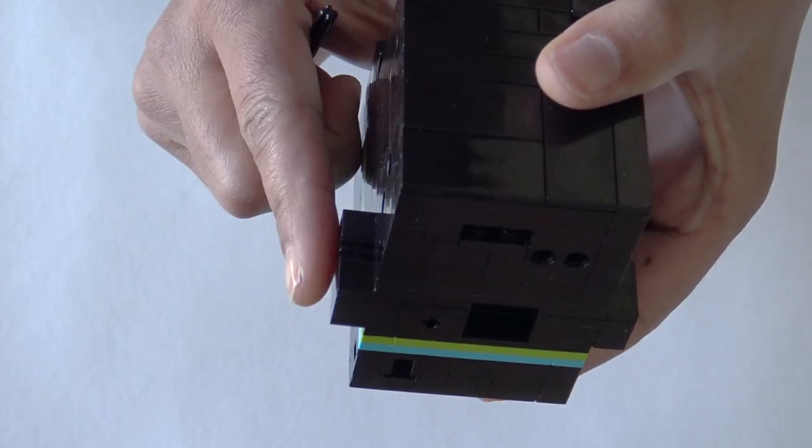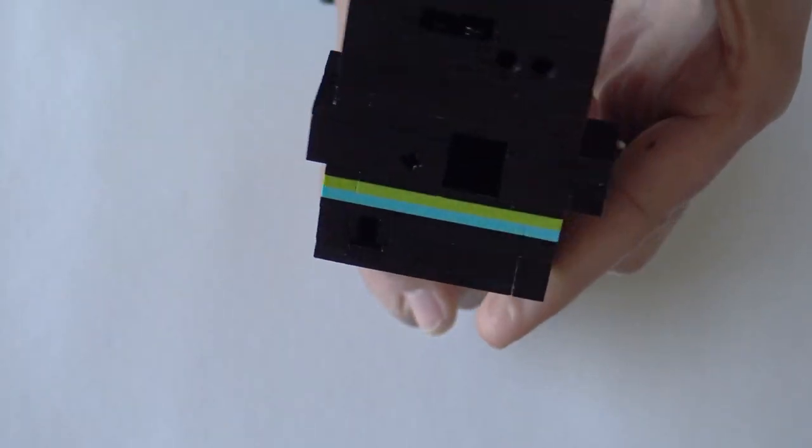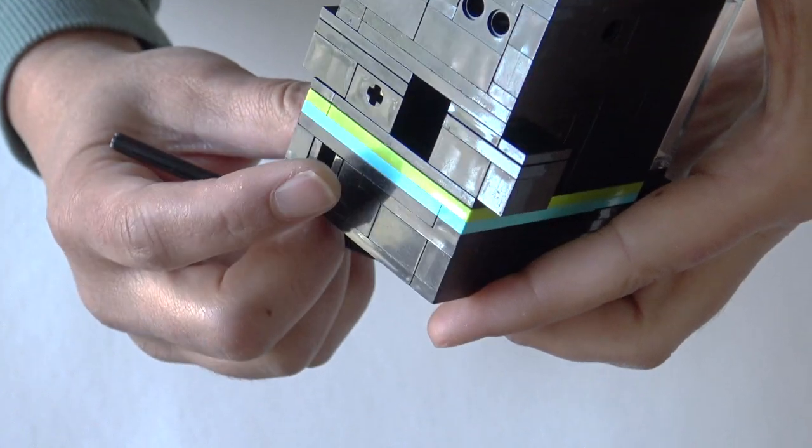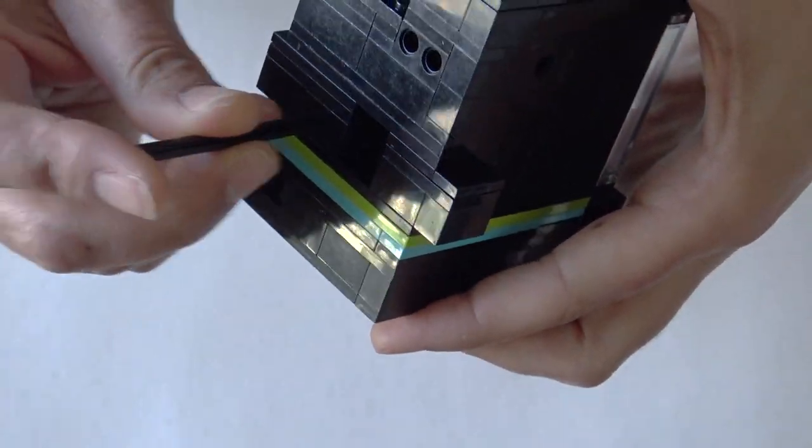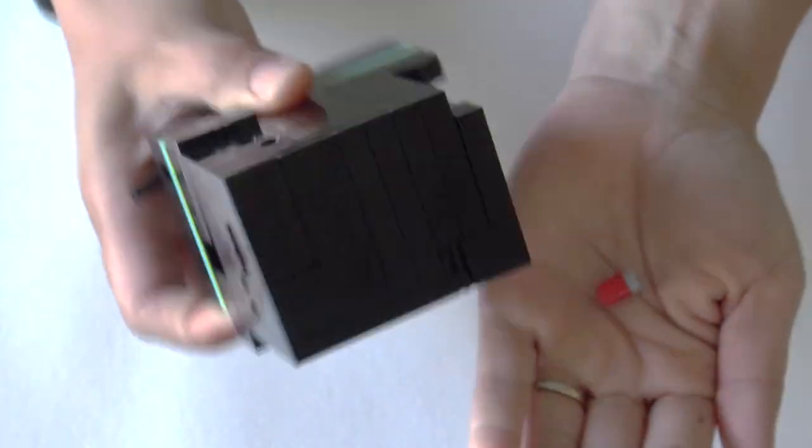This next one's kind of tricky. You can push the bricks in about halfway with your finger, or you can use the axle to line up the pieces together at about halfway, and you should be able to feel when it's able to go all the way through.